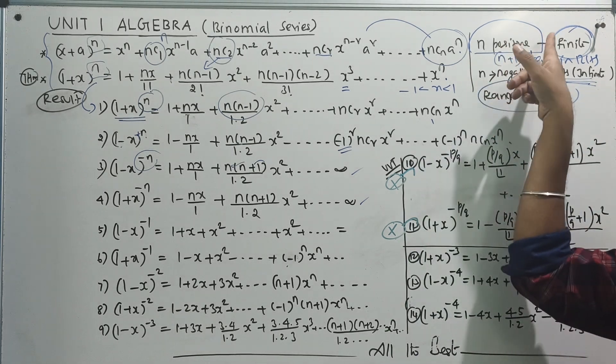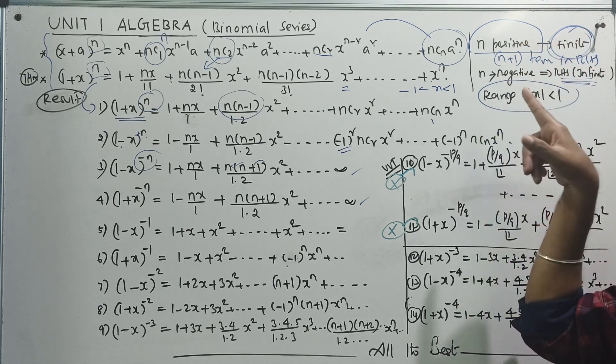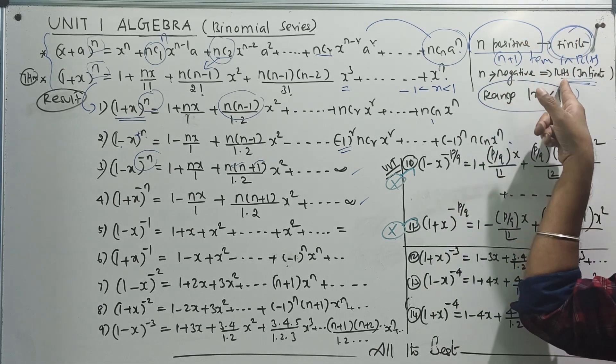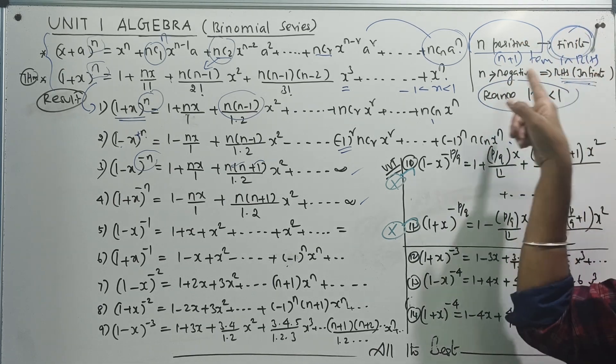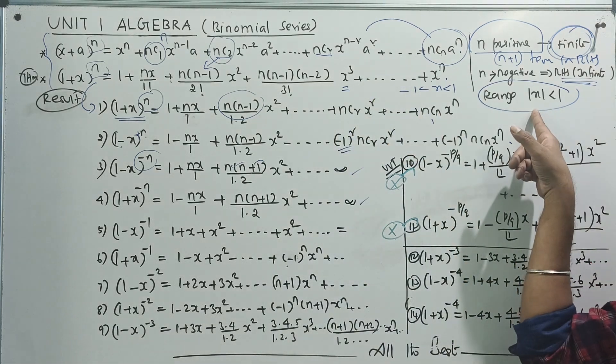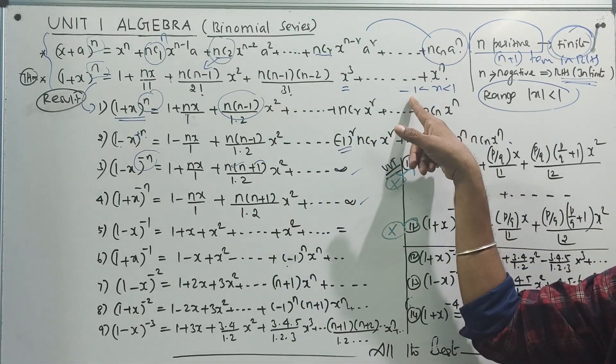If n is positive, there are n plus 1 terms on the right-hand side. If n is negative, the right-hand side is infinite. The range of the binomial series is mod x less than 1, that is, minus 1 less than x less than 1.